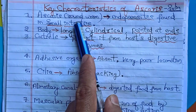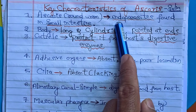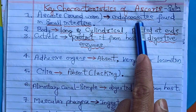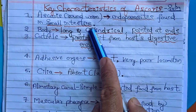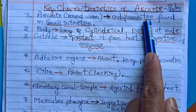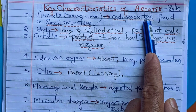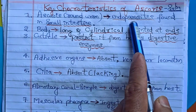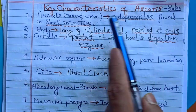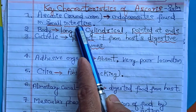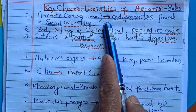Ascaris is commonly called roundworm. It belongs to the phylum Aschelminthes, also called Nematyhelminthes. It is an endoparasite, found in the small intestine of man. Endoparasite means a parasite which lives inside the body — particularly inside the small intestine of man.